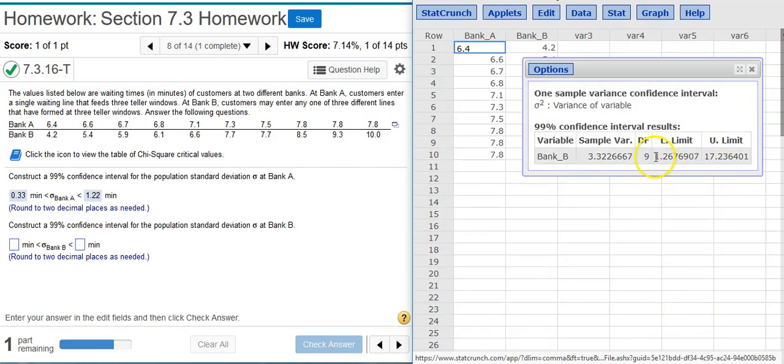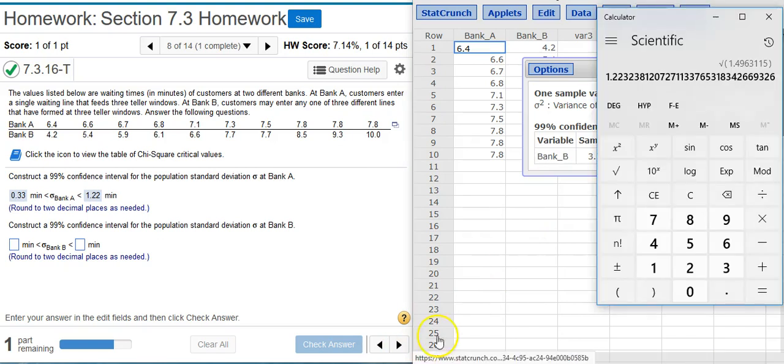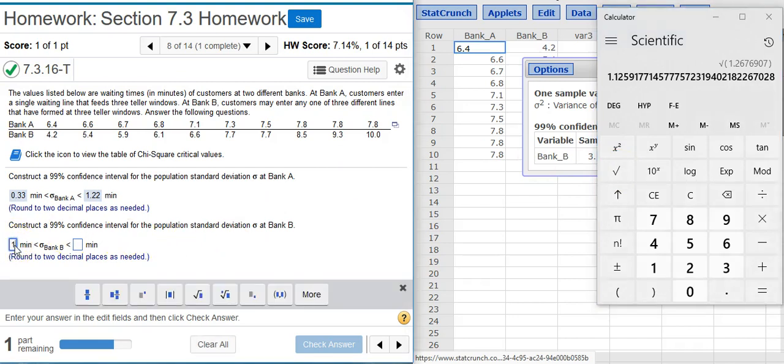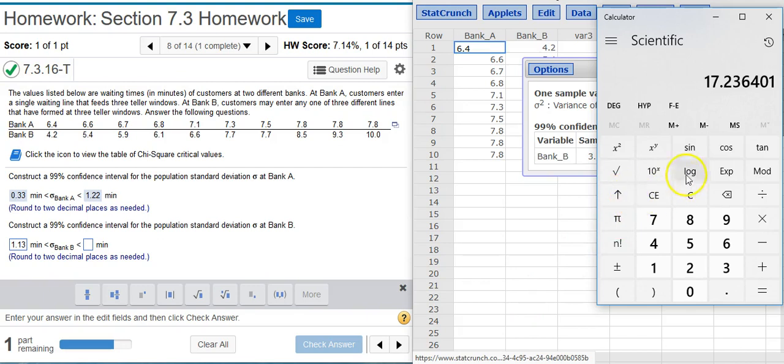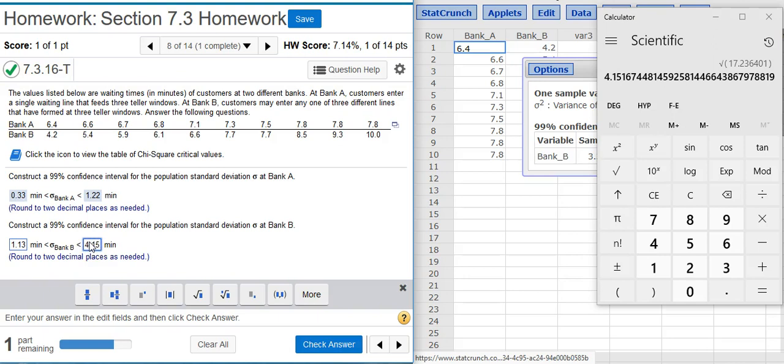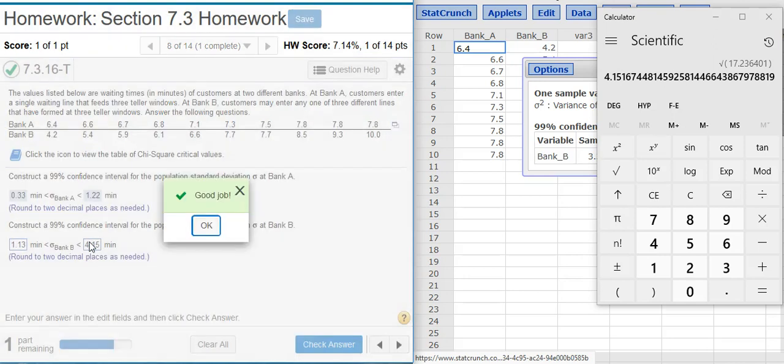I have to do the same thing again. Take the square root of my upper and lower limits to find the values that I need. Good job!